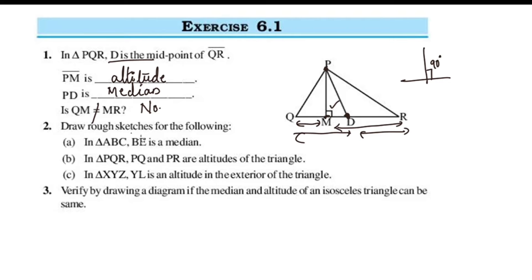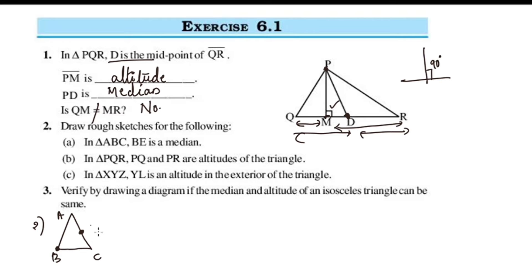Draw sketches for the following. Second question: In triangle ABC, BE is a median. Since BE is a median, E must be the midpoint of AC — so E is the midpoint of AC.